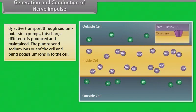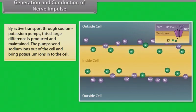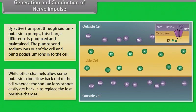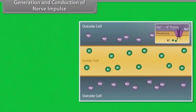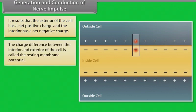The pumps send sodium ions out of the cell and bring potassium ions into the cell. While other channels allow some potassium ions to flow back out of the cell, the sodium ions cannot easily get back in to replace the lost positive charges. As a result, the exterior of the cell has a net positive charge and the interior has a net negative charge.